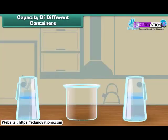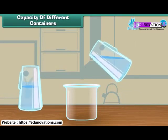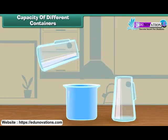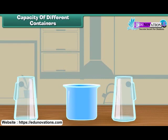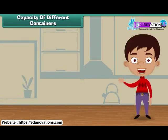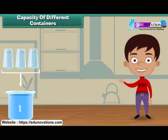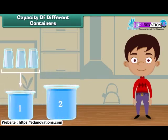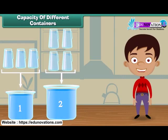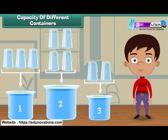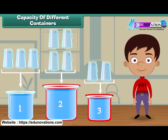Now let us fill the third vessel. One and two. Two jugs of water fill the third vessel. Friends, we have seen that vessel one is filled with three jugs of water, vessel two is filled with four jugs of water, and vessel three is filled with two jugs of water. It means vessel three holds the least water, and vessel two holds the most water.